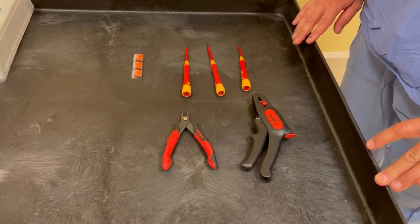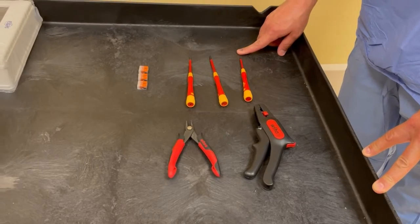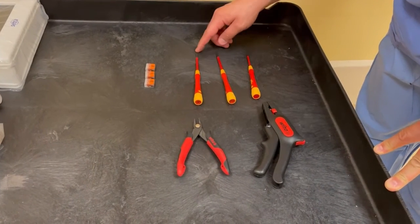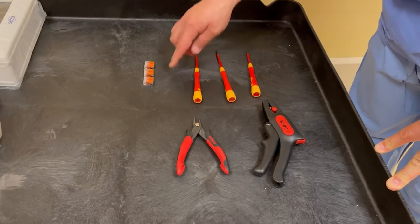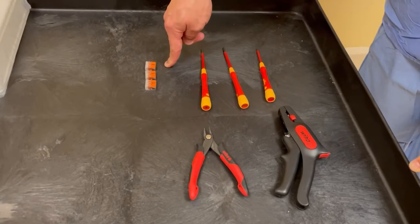For this install you're going to need a pair of wire cutters, a wire stripper, a very small flathead, a small flathead a little bit larger, a regular sized Phillips, and optionally three Wago connectors if you don't want to use wire nuts.